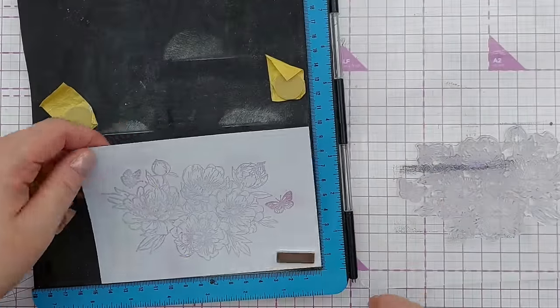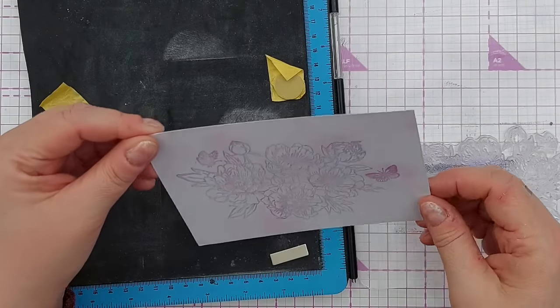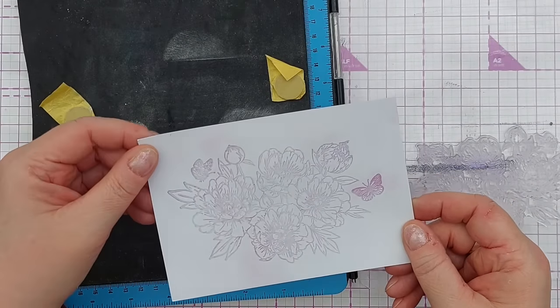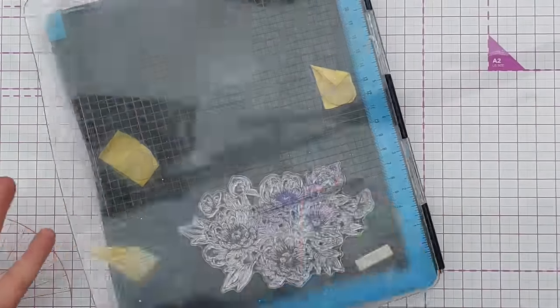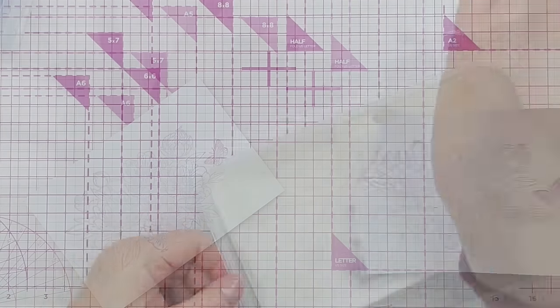And what that's done is that's picked up a little bit of the pigment powder and made this a bit lighter. But what I can now do is heat emboss that in clear embossing powder.